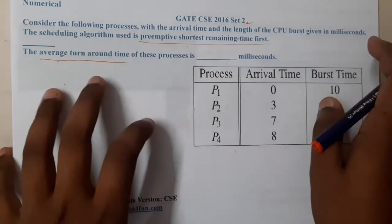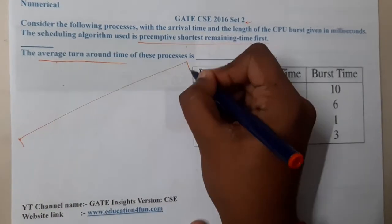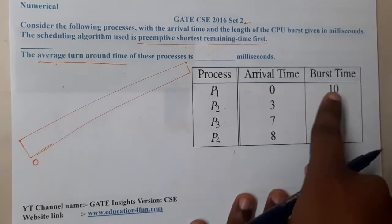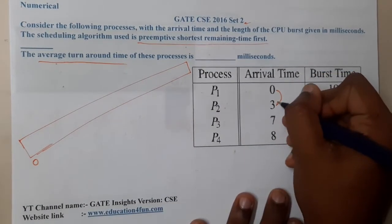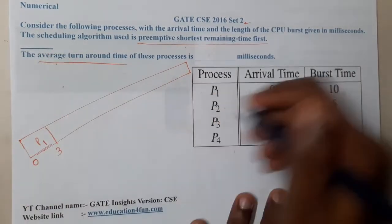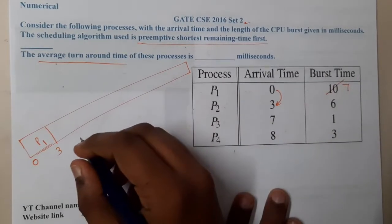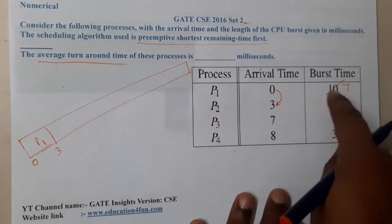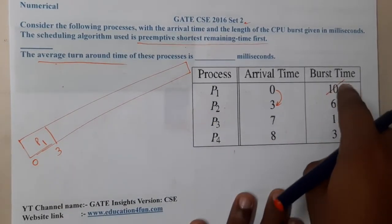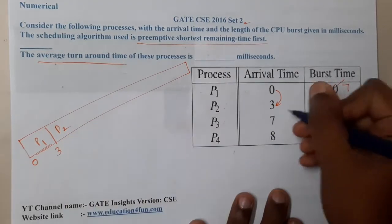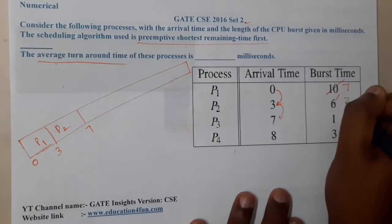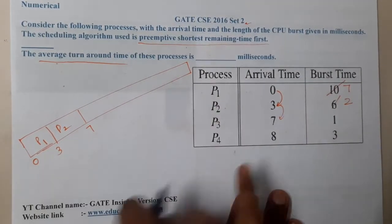For these types of questions, a Gantt chart will help a lot. At the 0th millisecond, only P1 is inside, and up to 3 milliseconds no one else came in, so P1 will execute for 3 milliseconds. His remaining time will be 7. At 3 milliseconds, P2 is also in the system. P2 has the minimum remaining time, so P2 will continue from 3 to 7 — that's 4 milliseconds — leaving P2 with 2 milliseconds remaining.